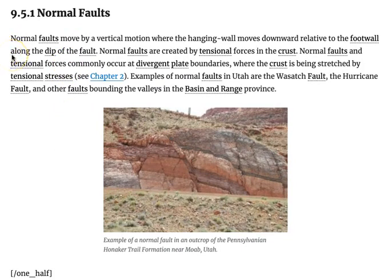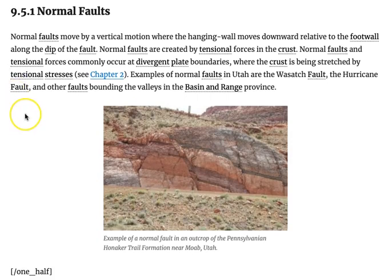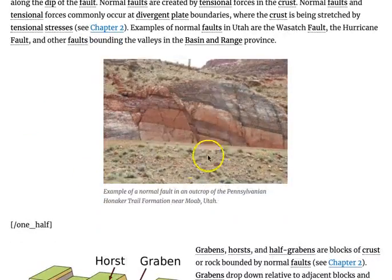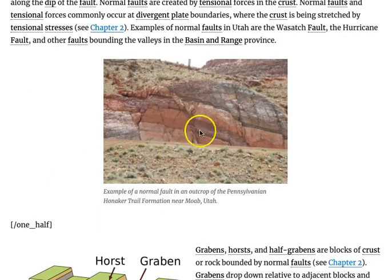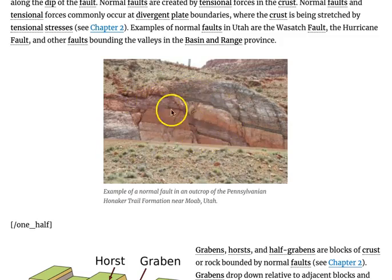Normal faults are created by tensional forces in the crust. Normal faults and tensional stresses commonly occur at divergent plate boundaries, where the crust is being stretched by tensional stresses. Examples of normal faults in Utah are the Wasatch fault, the Hurricane fault, and other faults bounding the valleys of the Basin and Range province. This photograph here is showing a good example of a normal fault, where you can see that this mauve colored bed has been offset as the hanging wall block moved downward along the fault.